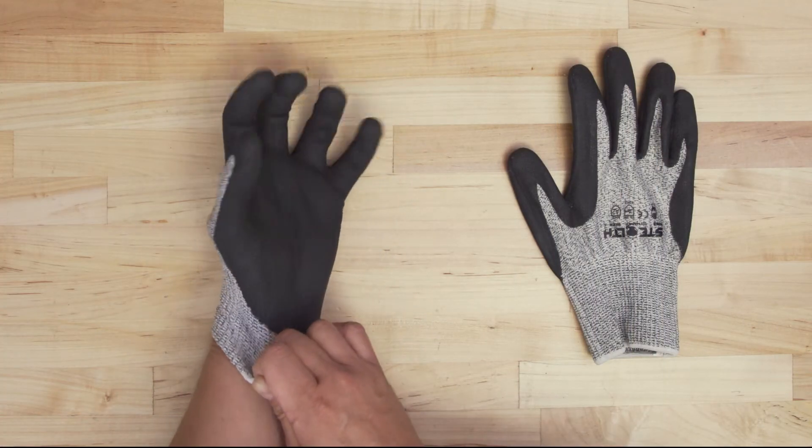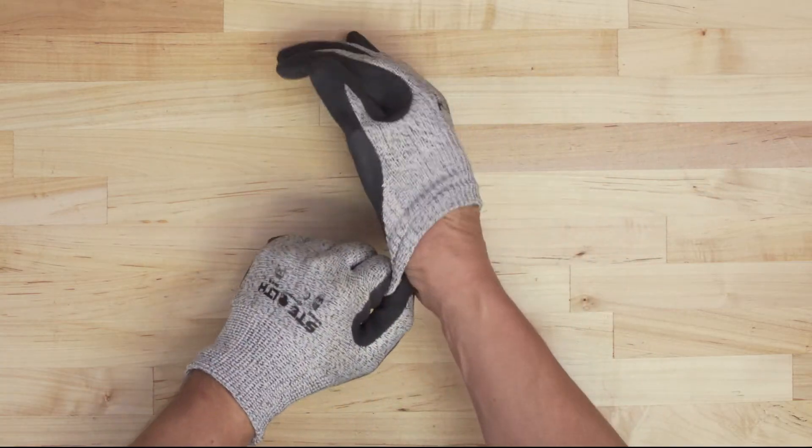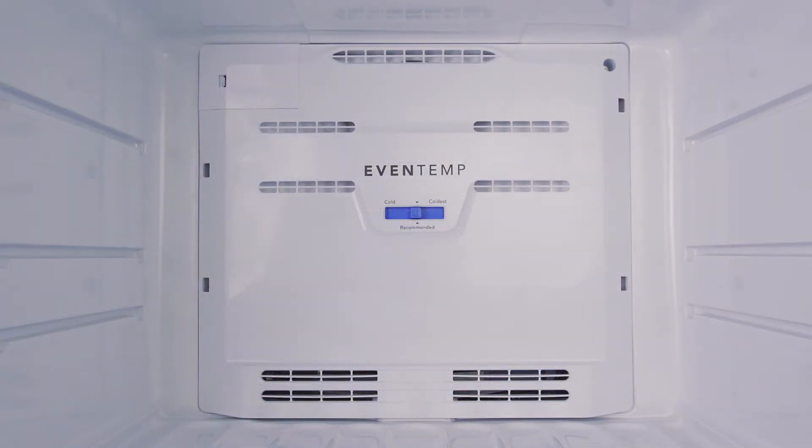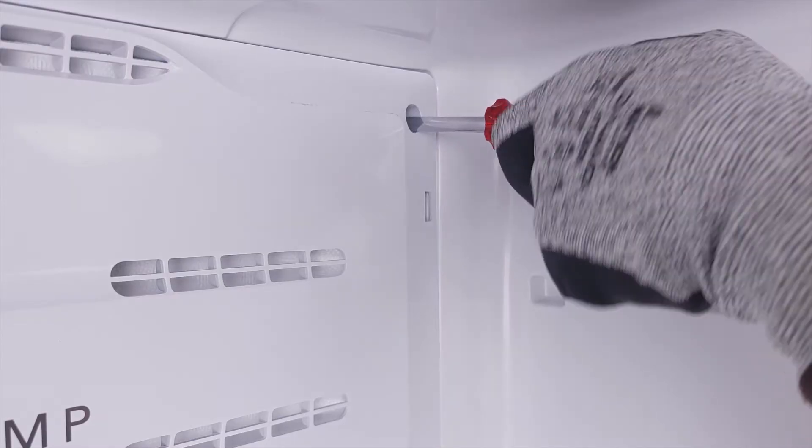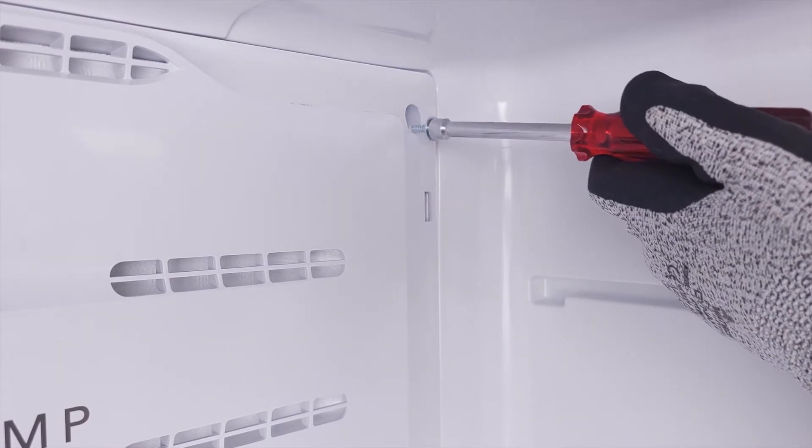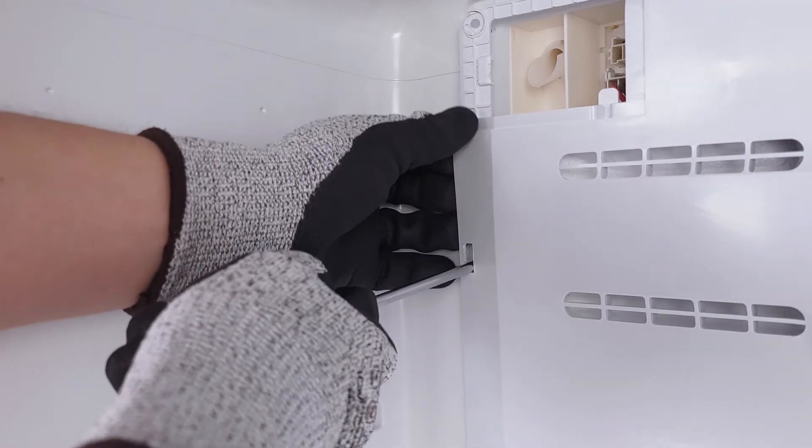Since the evaporator fins are sharp, it's best to wear cut-resistant gloves. To access the evaporator coils, you'll have to remove the screws to the freezer cover panel. Lift up the mounting tabs and remove the panel.